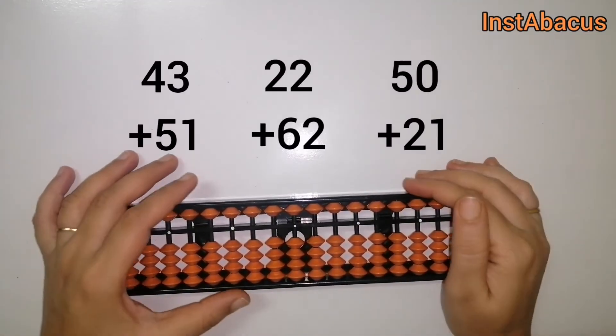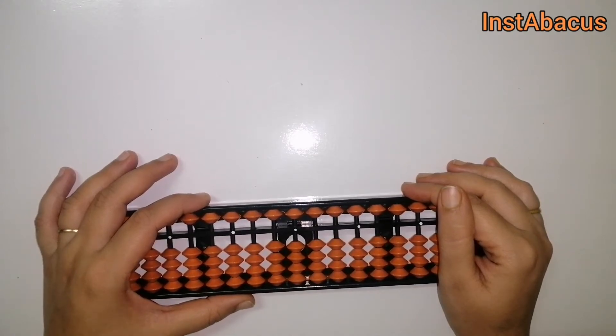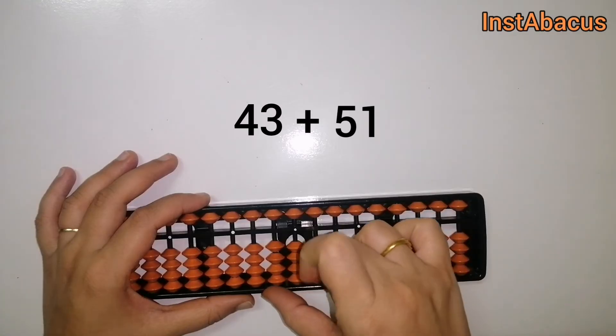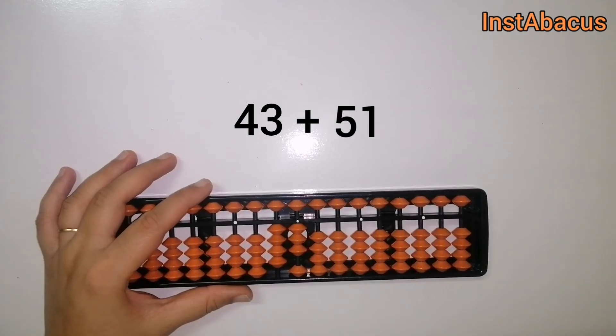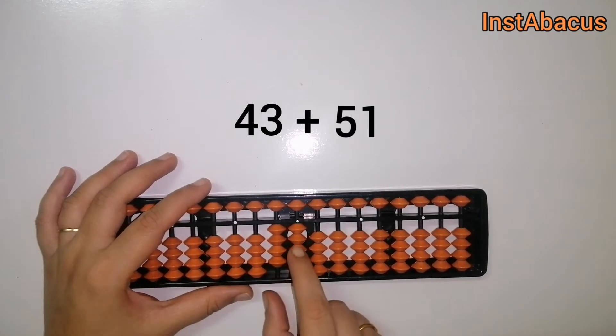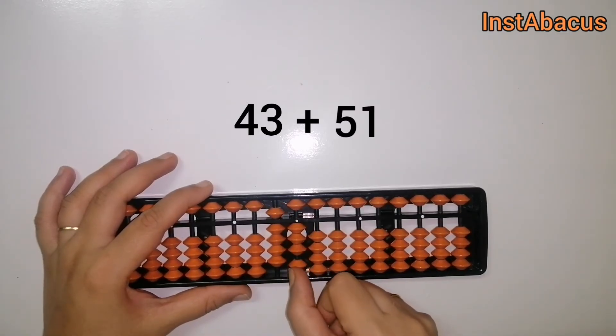We are going to do these three sums today. Let's start: 43 plus 51. That is 43, right? Plus 51. So for that we are going to move this heavenly bead here and this earthly bead here, 5 and 1.